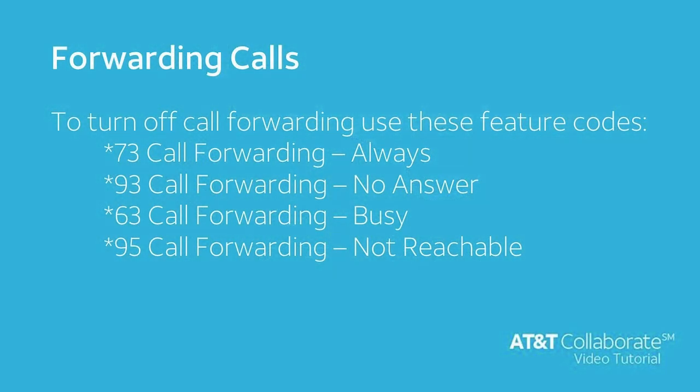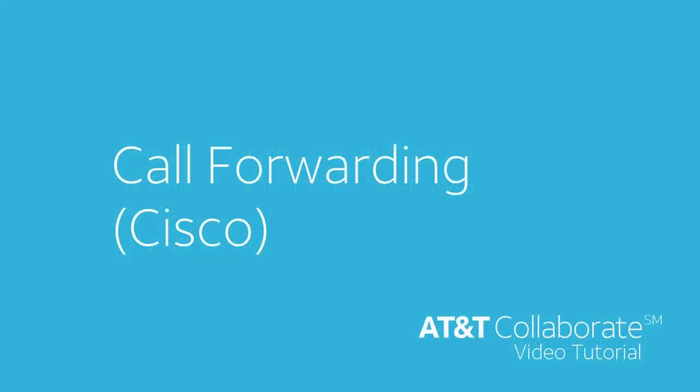The four feature codes for turning off call forwarding are: star 73 for call forwarding always, star 93 for call forwarding no answer, star 63 for call forwarding busy, and star 95 for call forwarding not reachable. Thanks for watching this AT&T Collaborate video tutorial.